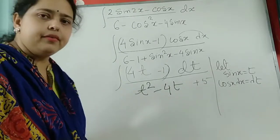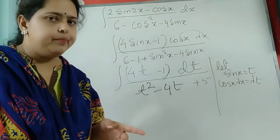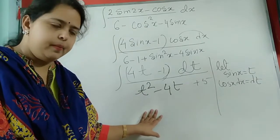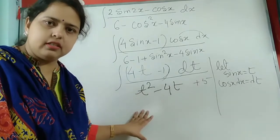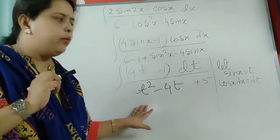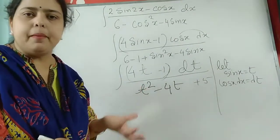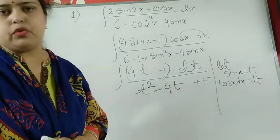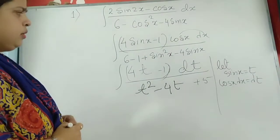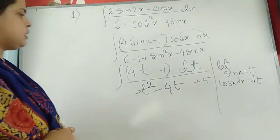Now look at the form I was talking about: it is (pt + q) / (at² + bt + c) — isn't it the same type? In the numerator this is a rational function of degree 1, and in the denominator it is a quadratic. In this type of problem we need another category of manipulation. Notice the denominator: it is t² minus 4t plus 5.